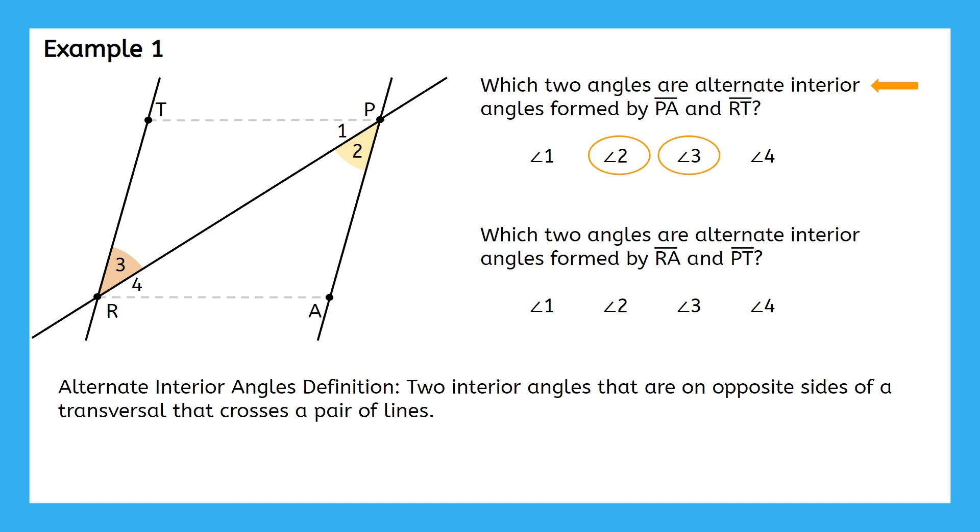Nice job. Can you see how angles 1 and 4 aren't actually formed by PA and RT? The other interior angles formed by PA and RT would be these two much larger angles that were not a part of our original diagram.